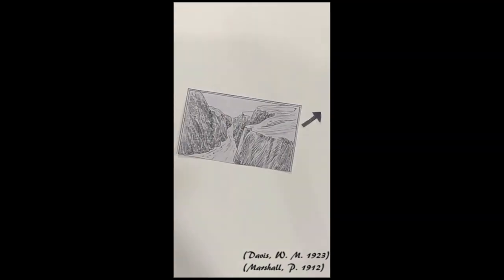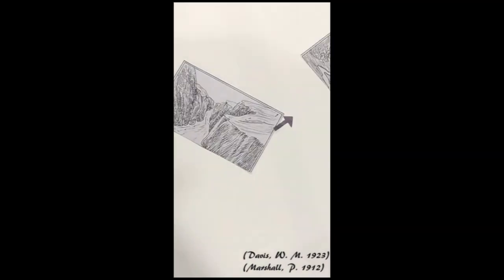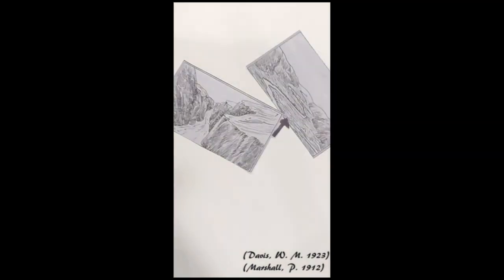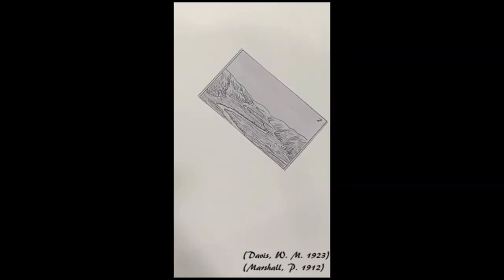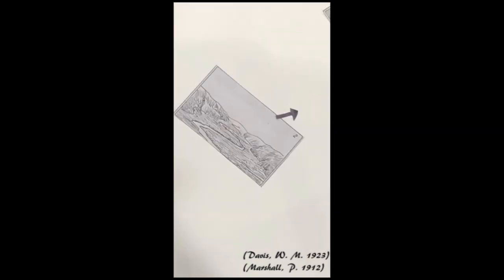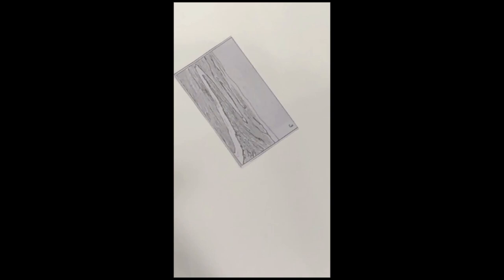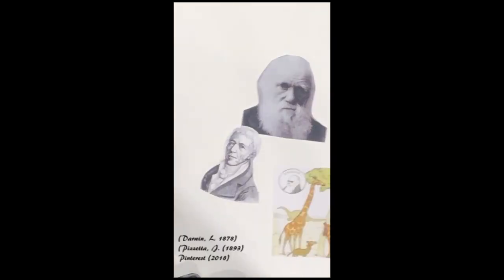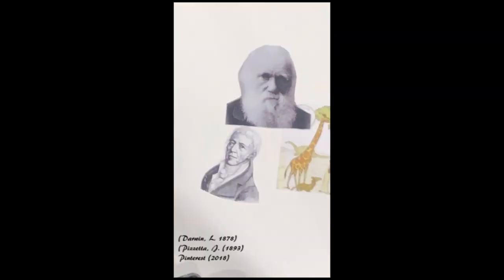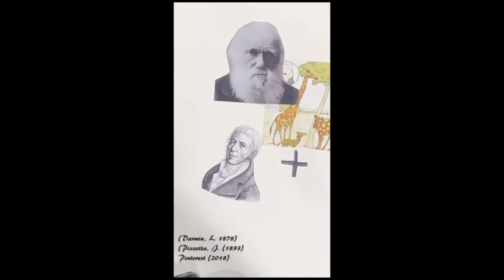The cycle of erosion is a period of time during which an uplifted landmass undergoes transformation by the process of land sculpture, resulting in a low featureless plane or peneplain. Davis was influenced by Darwinian and Neo-Lamarckian principles — the idea of landforms progressing through predefined stages of evolution. An organism could evolve along a preordained pathway, which could interrupt, slow down, or accelerate the required characteristics.